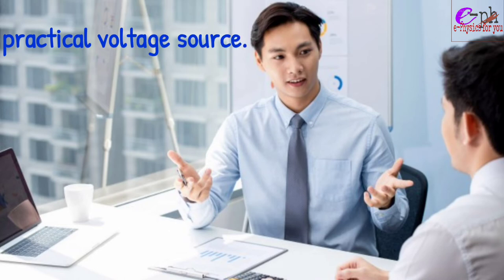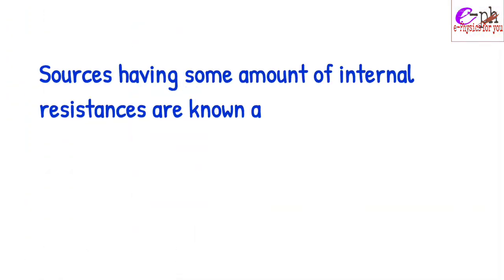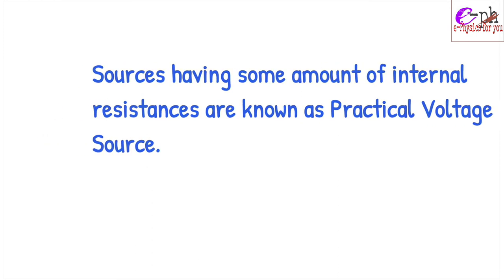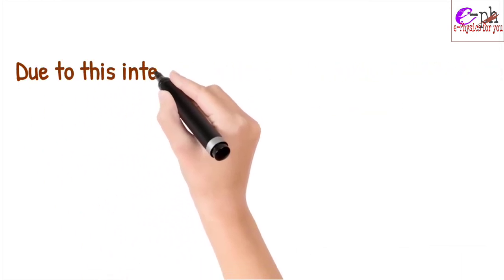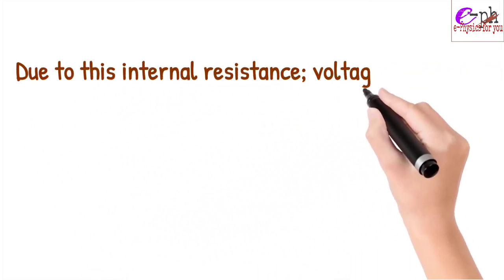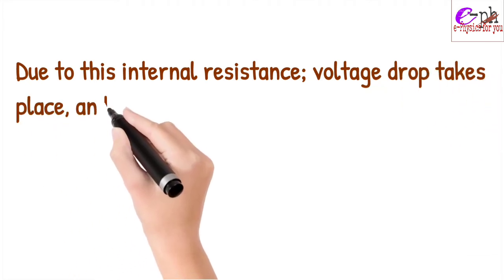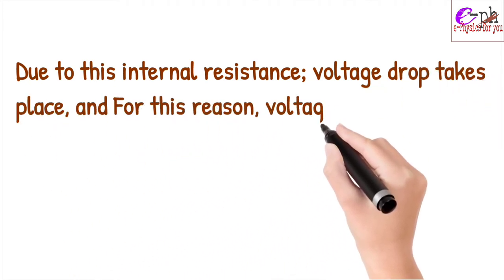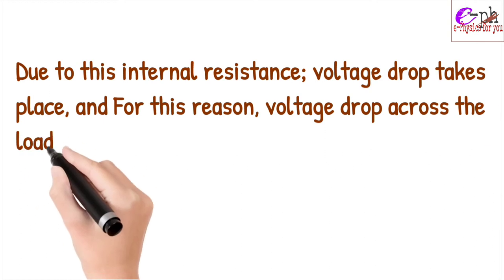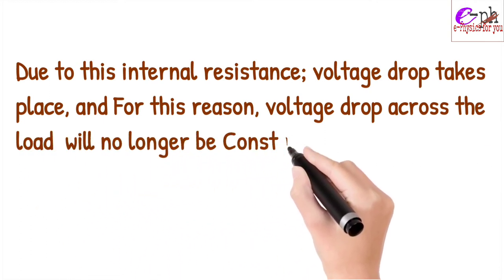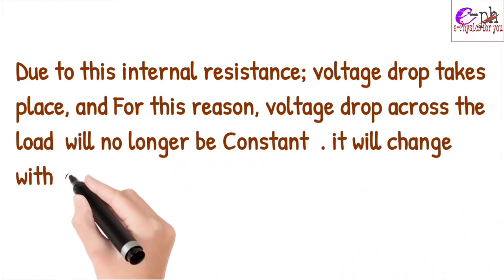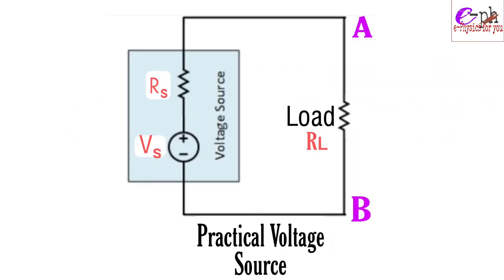Now we will discuss the practical voltage source. Sources having some amount of internal resistance are known as practical voltage sources. Due to this internal resistance, a voltage drop takes place, and for this reason the voltage across the load will no longer be constant — it will change with current. This is the circuit diagram of a practical voltage source.